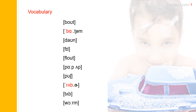Now let's practice vocabulary. The first one: boat. Boat. Boat spells B-O-A-T. Boat. Next one: bottom. Bottom. Bottom spells B-O-T-T-O-M. Bottom.